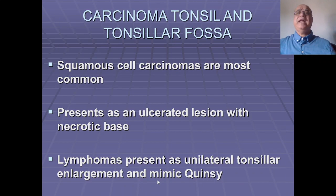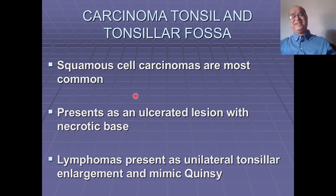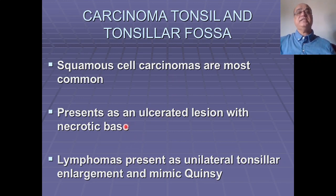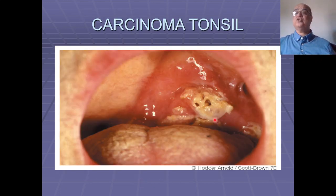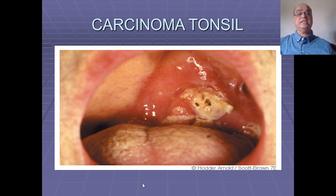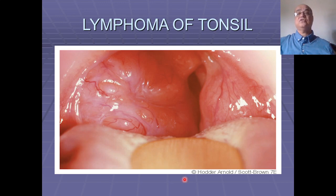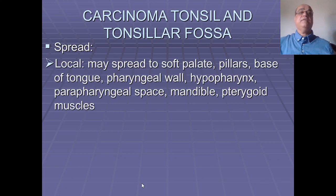For carcinoma of the lateral wall — tonsils and tonsillar fossa — squamous cell carcinoma is the most common, though lymphomas also occur; 90% of lymphomas in oropharyngeal tumors involve the tonsils. SCC presents as an ulcerated lesion with a necrotic base, while lymphomas present as unilateral tonsillar enlargement and may mimic quinsy. Initial lesions tend to be exophytic with central ulceration and infiltrative margins. Some develop submucosally with neck nodes and no obvious tonsillar lesion.